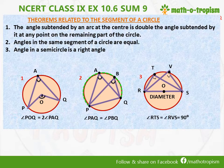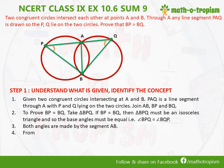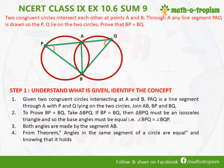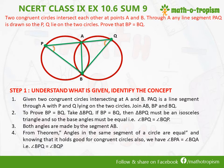We are going to apply the theorem: angles in the same segment are equal, which holds good for congruent circles also. As a result, angle BPA will be equal to angle BQA, which is nothing but angle BPQ equal to angle BQP. So we have proven that the base angles are equal, and therefore the opposite sides will also be equal since it is an isosceles triangle.